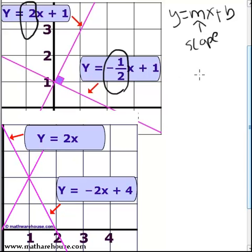2 and negative 1 half are perpendicular, but 2 and negative 2 are not perpendicular. So these guys don't work, they do. The top ones do. Let's look at 2 and think about it as a fraction, 2 over 1.